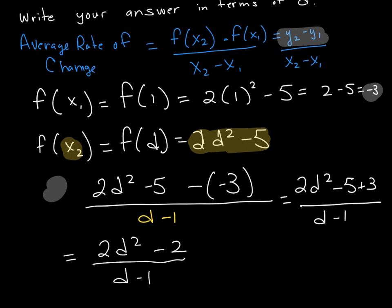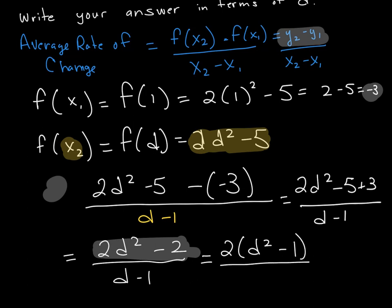I now need to factor my numerator. To factor this numerator, the first thing I'm going to do is factor out a GCF. My GCF is a 2. Then I'm left with d squared minus 1. Now I'm going to copy my denominator back over. That's d minus 1.